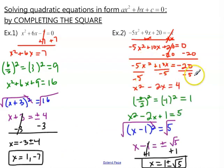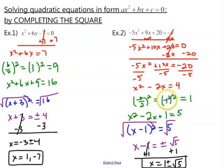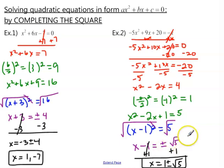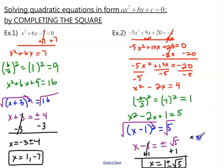Once you divide through by negative 5 on each term, you should have x squared minus 2x equals positive 4. Then find the magic number: negative 2 divided by 2, squared — so negative 1 squared, which is positive 1. Add 1 to both sides: x squared minus 2x plus 1 equals 5. Factor the left side the special way. When you take the square root of both sides, the squared cancels and you have plus or minus the square root of 5. Do not change it to a decimal if it's not a perfect square — leave it in radical form. Add 1 to both sides, and the final answer is x equals 1 plus or minus the square root of 5. You can also write it as x equals 1 plus the square root of 5 and 1 minus the square root of 5.